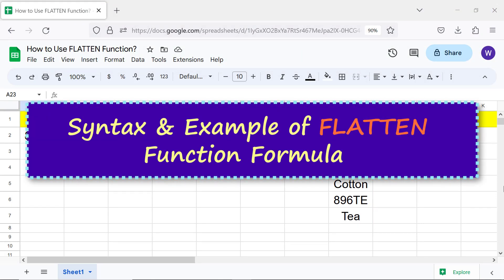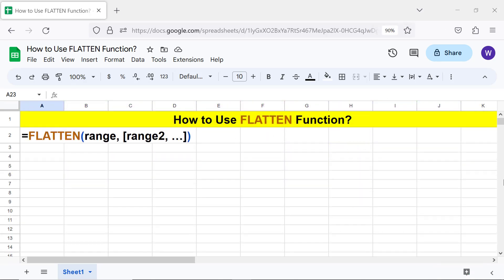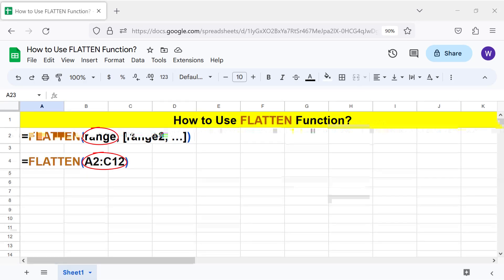Syntax and example of Flatten function formula: Here's an example. Range is the first range of values spanning one or more rows. Range 2 and others are optional and is the second and other ranges of values spanning one or more rows.